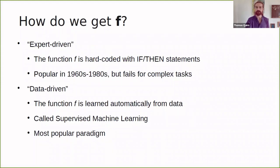Now, how do we actually get that F? Well, in the old days, this F was handcrafted. It was, they call this expert-driven. It was hard-coded using if and then statements. You might say, if this one predictor is bigger than this number, and if this second predictor is bigger than the second number, then Y equals one. Otherwise, Y equals zero. This was popular in the 1960s and 1980s, but it fails for complex tasks because we simply don't know all of the rules that are necessary to make a prediction.